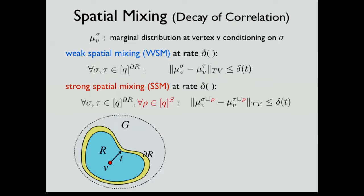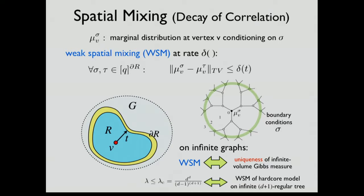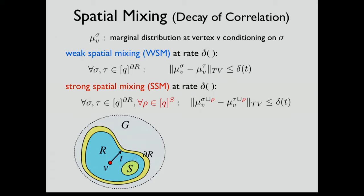In particular, for the hardcore model, this threshold is the threshold for uniqueness of Gibbs measures on the infinite d+1 regular tree — hence it is called the uniqueness condition. Regarding the decay function delta: for everything we need, it must decay exponentially; but for uniqueness, it is okay to decay slowly, even polynomially.